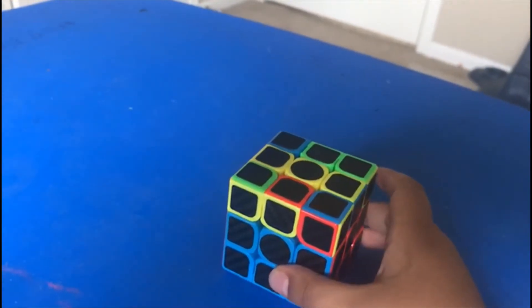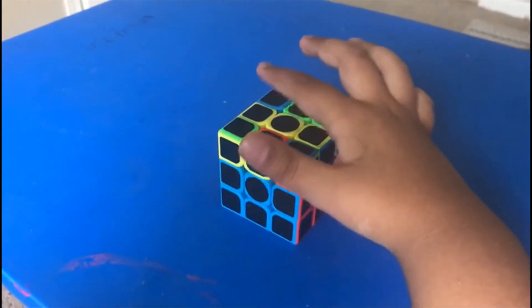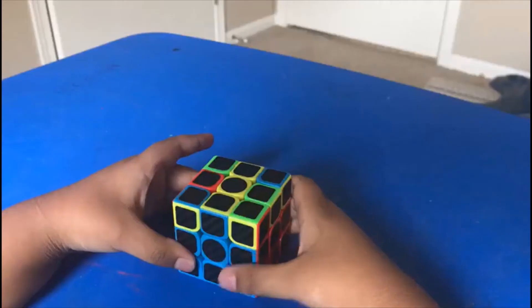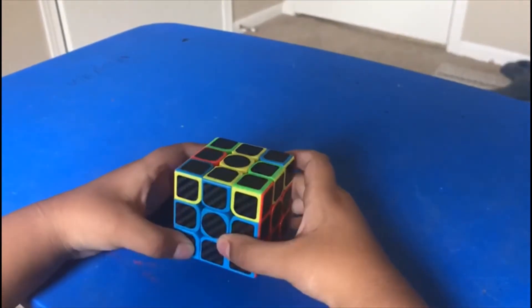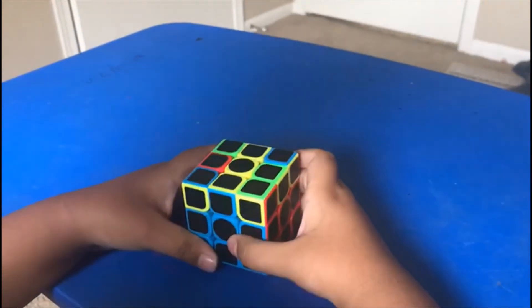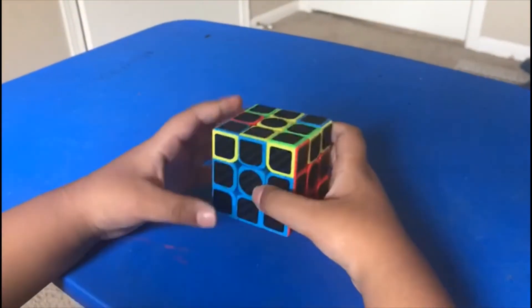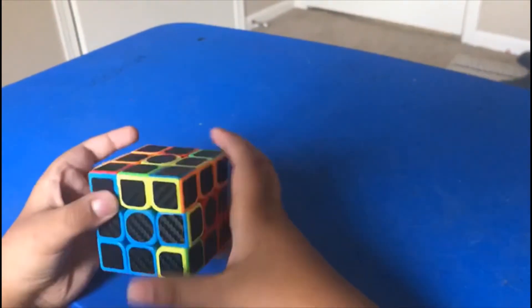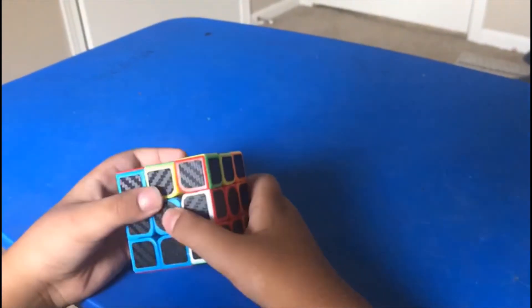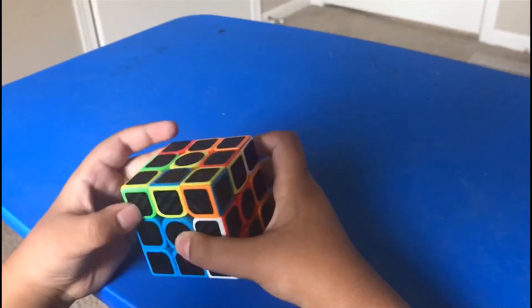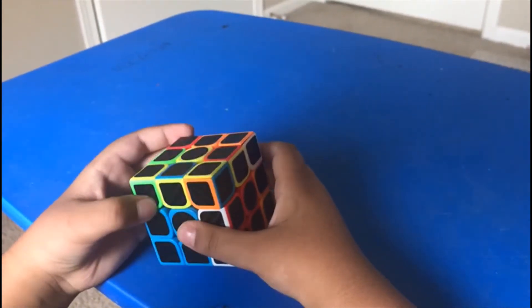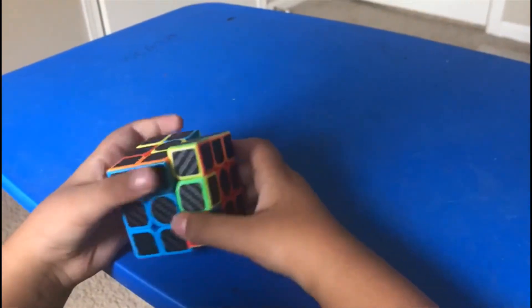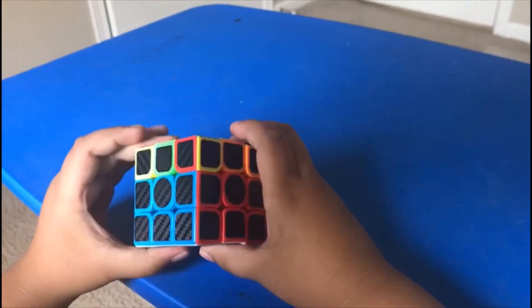Inspect on the top. Apply F-U-R-U-R-F-R. Apply F-U-R-U-R-F-U-R-U-R-U-R. U prime, R prime, F prime. Turn the top.